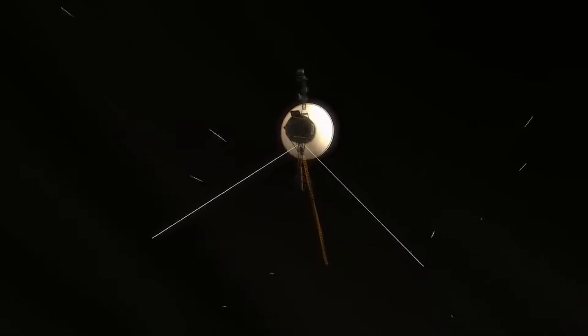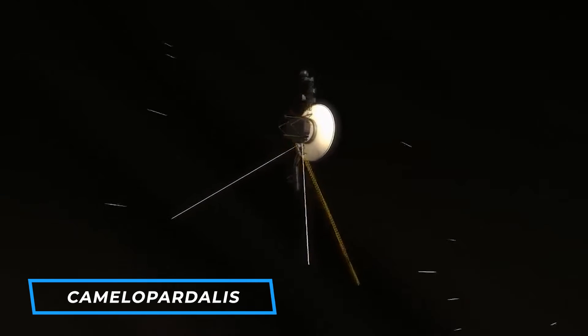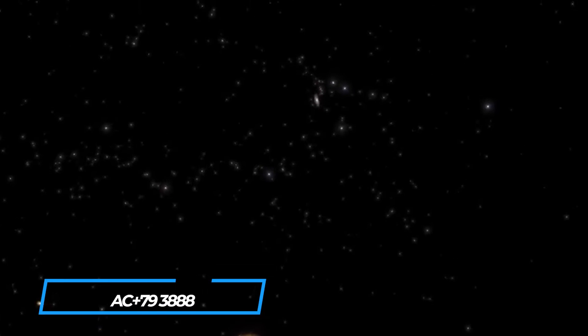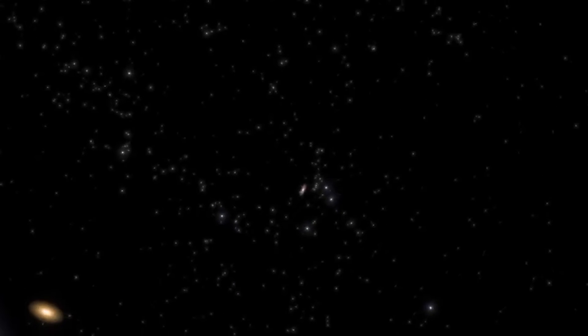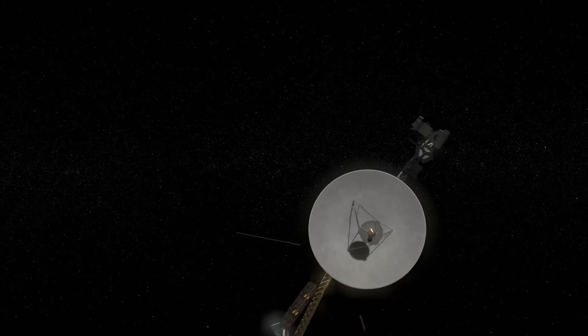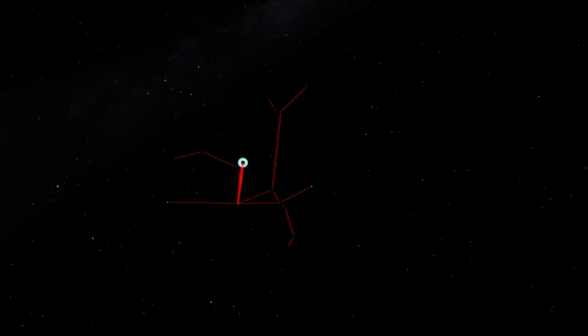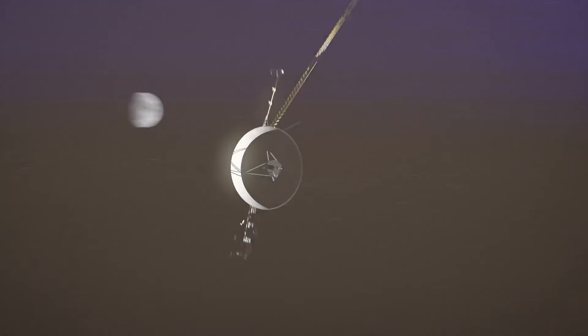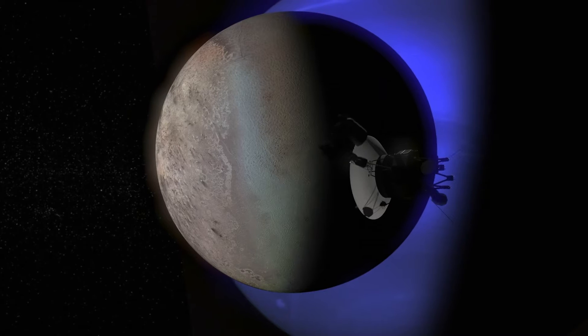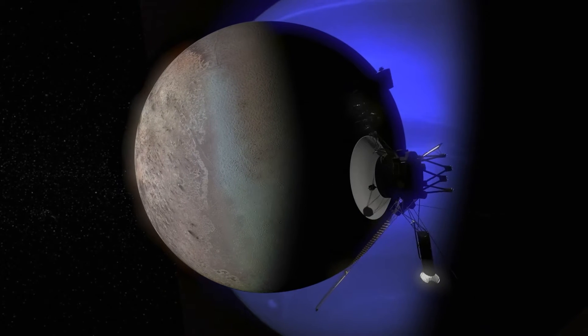Voyager 1 will come relatively close to a star in the Camelopidalis constellation called AC plus 793888 in about 40,000 years. Likewise, Voyager 2 is on a similar path to approach a star called Ross 248 in the Andromeda constellation. These journeys are on time scales that far exceed the operational lifetimes of the Voyagers, and their power supplies will eventually run out. It's anticipated that the last communication with these spacecraft will likely occur in the 2030s at best, according to mission personnel.